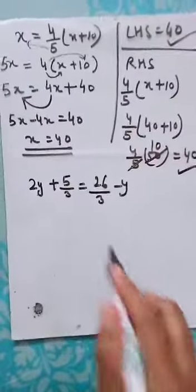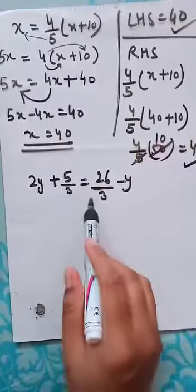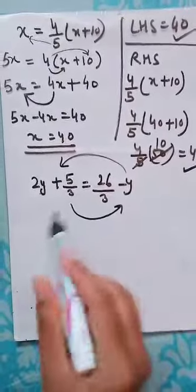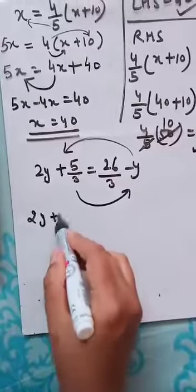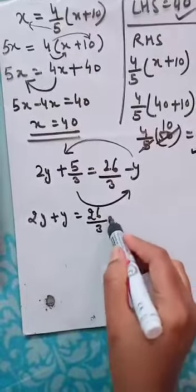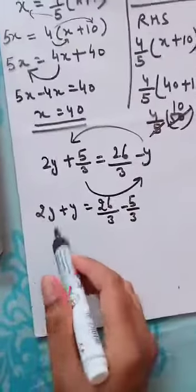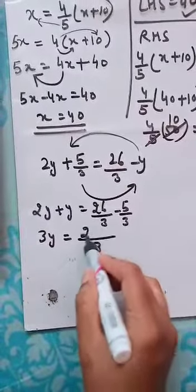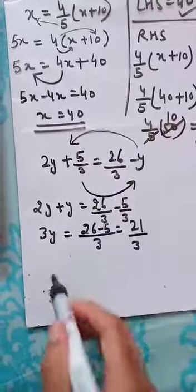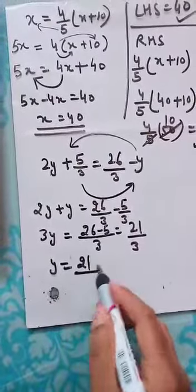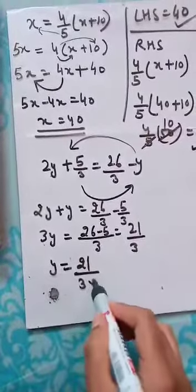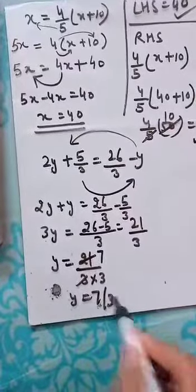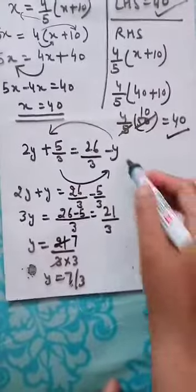Now let us solve the next question. Again, the same thing that I have to take the constants on one side and the variables on other side. So y, we bring it here, and 5 by 3 we take here. So 2y plus y is equal to 26 by 3 minus 5 by 3. So 2y plus y becomes 3y is equal to LCM is same 3. 26 minus 5. So 26 minus 5, that becomes 21 divided by 3. So y value will be 21 divided by 3. And this 3 also comes down. So 3 into 3. So 3 sevens are, so the answer is y is equal to 7 by 3.